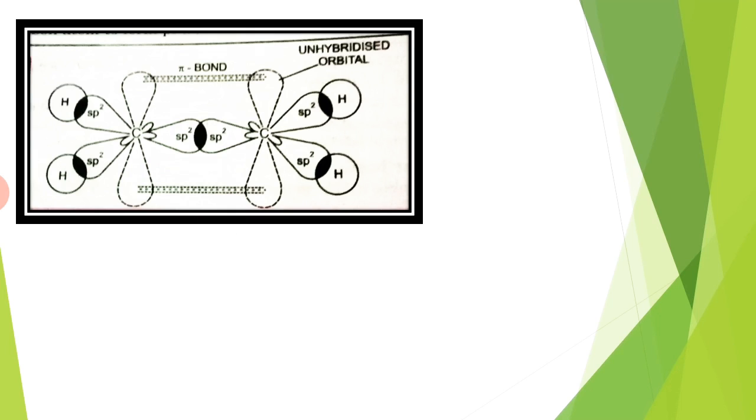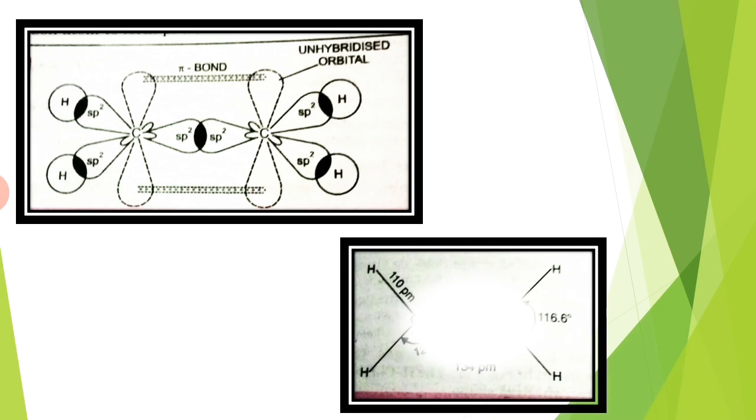Sigma bonds are stronger than pi bonds because during the formation of the sigma bond, the overlapping of orbitals takes place to a larger extent.